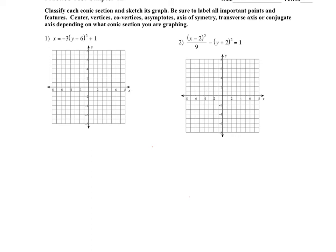For questions 1 and 2, it says classify the conic section and sketch the graph. Be sure to label all important points and features such as center, vertices, co-vertices, asymptotes, axis of symmetry, transverse axis, or conjugate axis, depending on what conic section you're graphing.